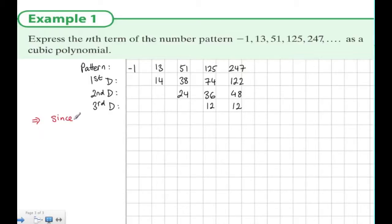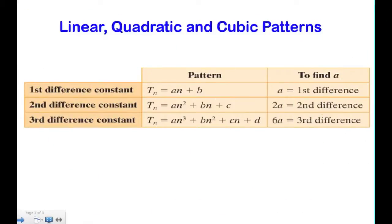So in this example, we see that the third difference is constant. So we conclude from this that we have a cubic pattern. If we consult the table, we see a cubic pattern means the third difference is 6a.